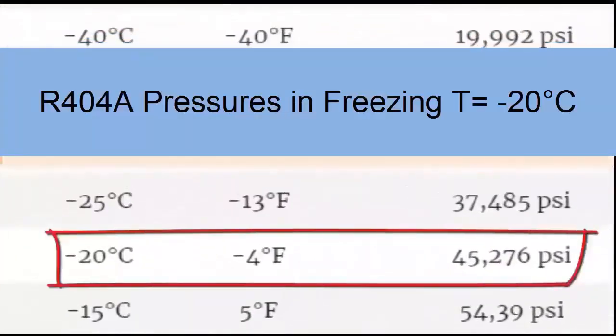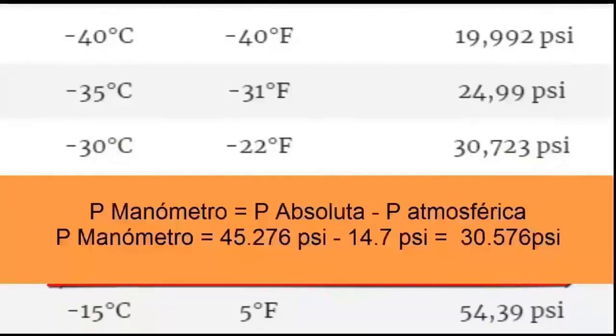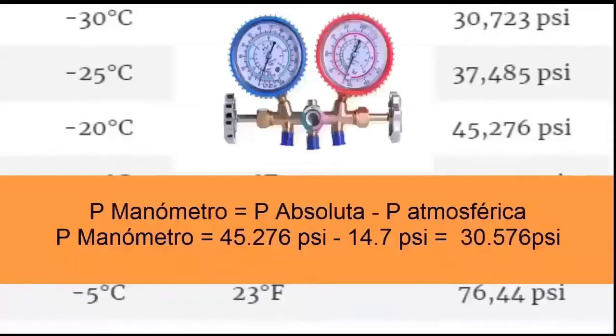Low pressure present in freezing equipment for an evaporator temperature of minus 20 degrees Celsius, about minus 4 degrees Fahrenheit. Here we have an absolute pressure of 45.276 psi. To know the low or evaporator pressure that the manometer would mark, we subtract the atmospheric pressure from the table value. In this way, 45.276 psi minus 14.7 psi is obtained, resulting in a gauge pressure value of 30.376 psi.